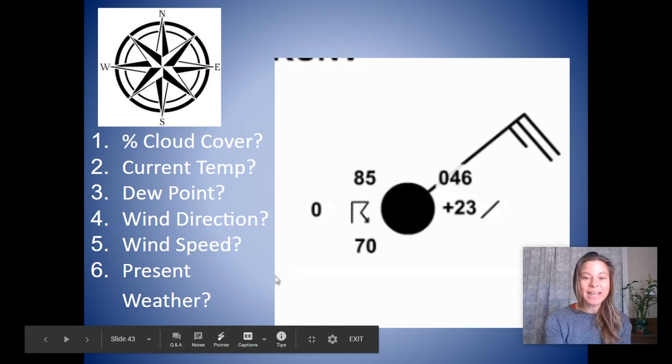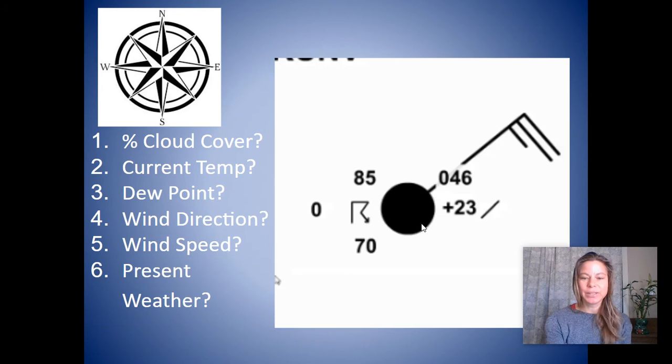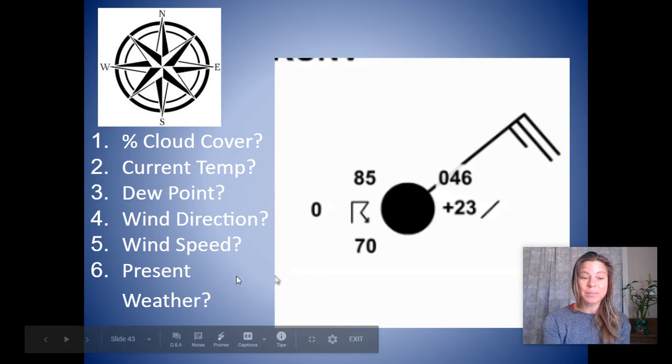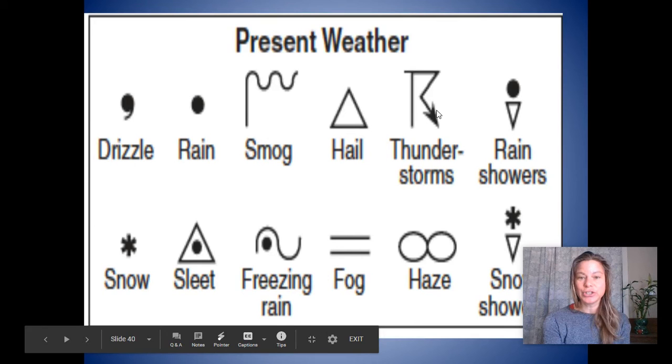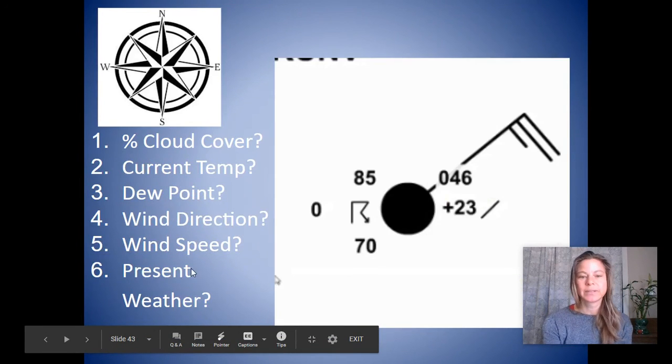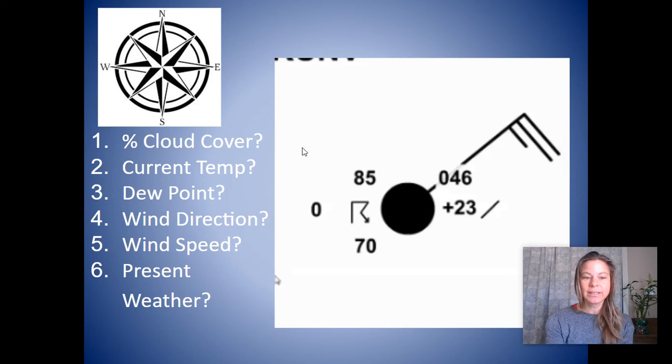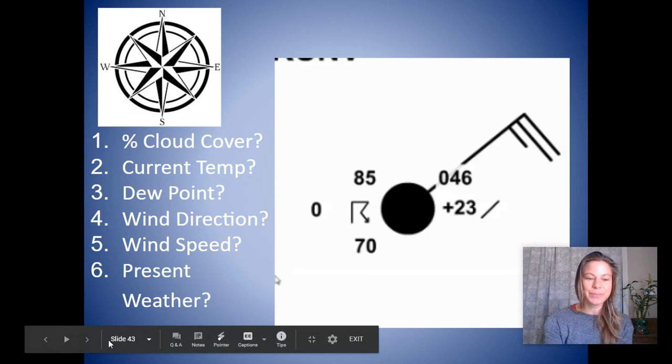Okay. Percent cloud cover, what do you think? Hundred percent. Totally cloudy day. Current temperature, eighty-five. Dew point, seventy. Is there a chance of rain? Maybe. Might rain this day if it's eighty-five and it drops to seventy at night. Think about those summer days where it's like eighty-five and nice out, and then at night the temperature drops, and then you get what? What's that a symbol for? You remember? It's the cool one. Yeah. Thunderstorms. Thunder, thunder, thunderstorms. And the wind direction is northeast. Wind speed, long one, long one, short one, twenty-five. Present weather, thunderstorms.